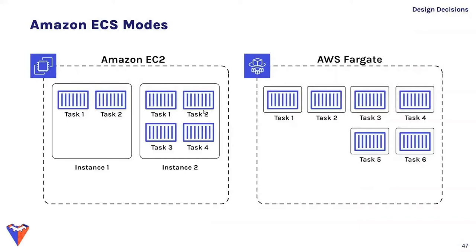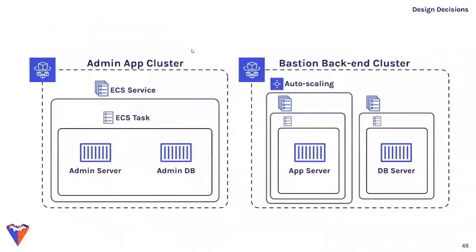With ECS chosen, we evaluated EC2 mode versus Fargate mode. In EC2 mode you own and manage servers, paying for the infrastructure period you run instances. With Fargate, AWS allocates compute resources as needed — you don't control the infrastructure, get pay-as-you-go pricing, and don't have to choose an instance type upfront. AWS recommends EC2 for large workloads optimized for price and Fargate for large workloads with low admin overhead or for mid-to-small workloads. For Bastion, Fargate was the better choice since we needed to easily deploy or tear down backends.